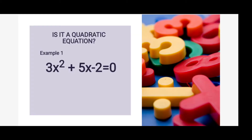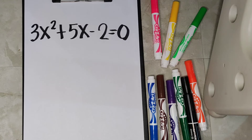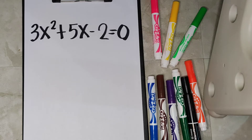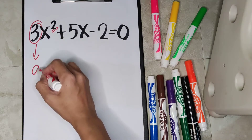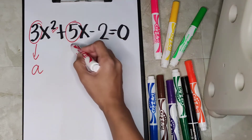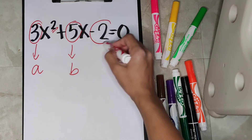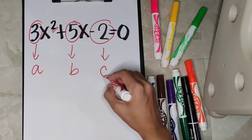Let us check if the following equations are quadratic or not. We have 3x squared plus 5x minus 2 is equal to 0. Since this is already arranged in standard form, we can say that this is an example of a quadratic equation because the degree of the equation is 2 or the highest exponent is 2. So we can say that 3 is the value of a, 5 is the value of b, and negative 2 is the value of c.